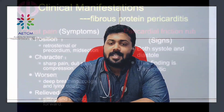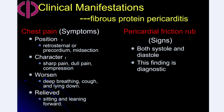In Stage 1, fibrinous pericarditis, symptoms include chest pain — classically retrosternal or precordial — described as sharp, shooting, or compressive in character, and rarely dull. The pain worsens with breathing and coughing, especially when lying down, and is relieved by sitting and leaning forward. On examination, the classic finding is a pericardial friction rub during both systole and diastole, which is generally diagnostic.